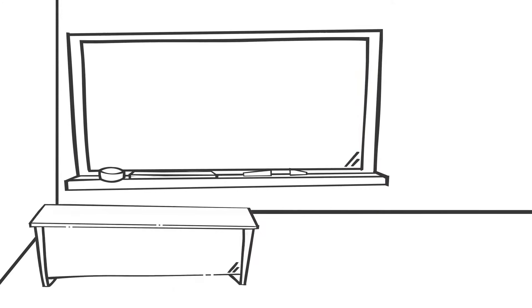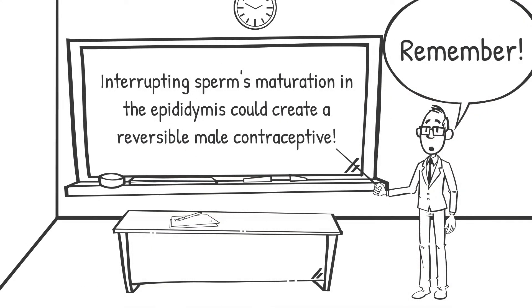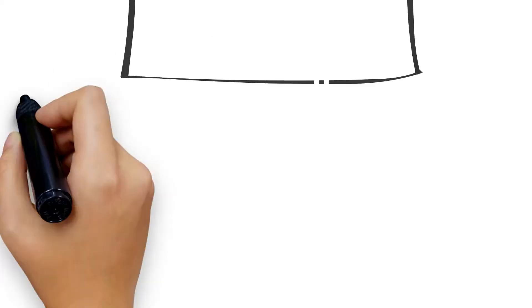Sperm's maturation in the Epididymus is also a long, complicated process that can be interrupted to render sperm non-functional and thus create a reversible contraceptive for men.